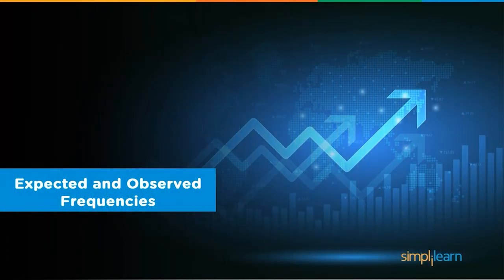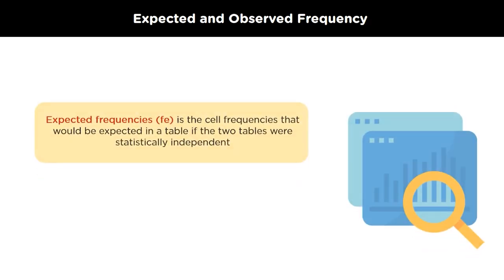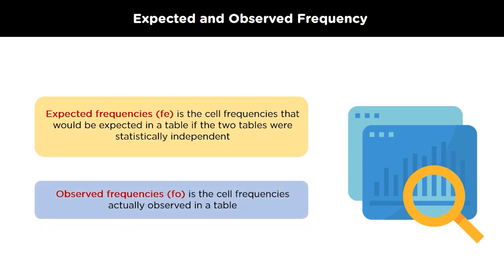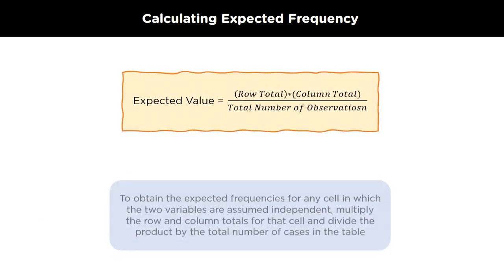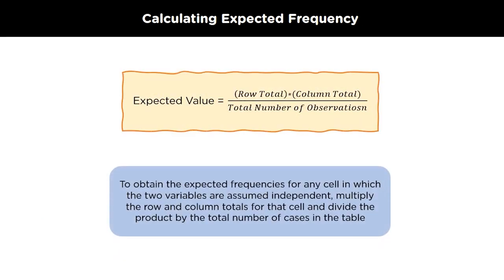Let's define expected and observed frequencies. Expected frequencies are the values that we would get if the two tables were statistically independent. The expected values are calculated based on our null hypothesis. The observed frequencies are those frequencies that we gather ourselves from our observation. To calculate the expected frequency, we have a direct formula. We multiply the row total by the column total and divide the whole value by the total number of observations.